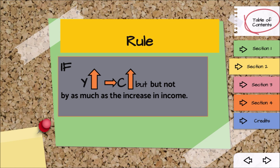Keep this rule in mind: if income increases, consumption also increases, but not by as much as the increase in the level of income. This relationship is based on the ceteris paribus assumption, as only the income-consumption relationship is considered and all other possible influences on consumption are held constant.